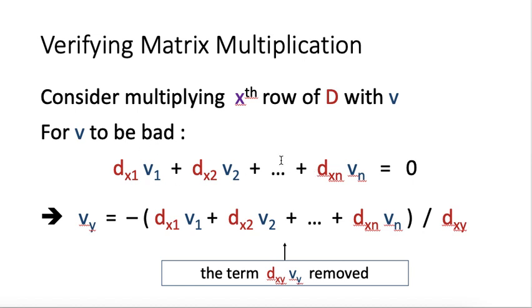We can now rearrange the terms a little bit so that we can isolate the term DXY times VY, and then all the remaining terms when divided by DXY we should get VY. For V to be bad, we need to have this.